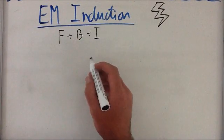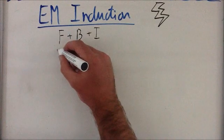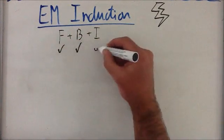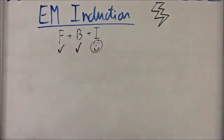So electromagnetic induction is where we have a force and we have a magnetic field and we can create an electrical current.